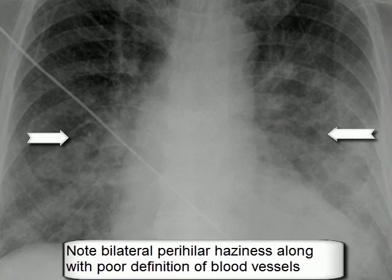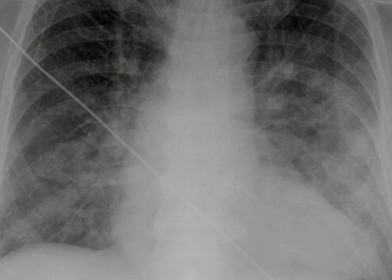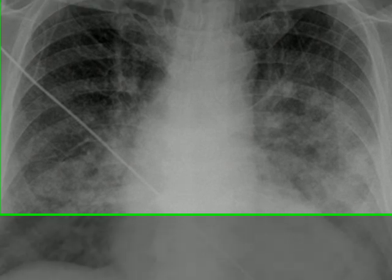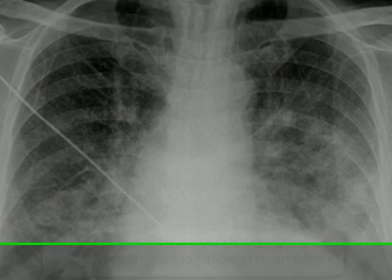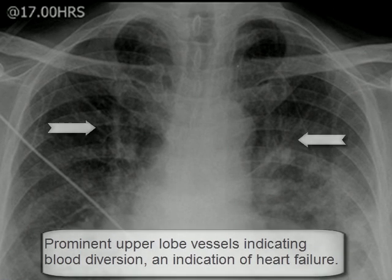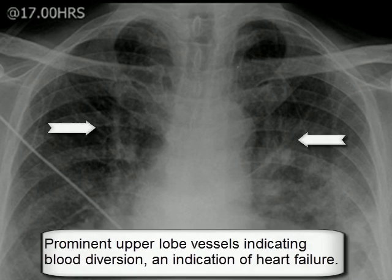The radiological stages are: first, perihilar congestion; second, interstitial edema, at which stage Kerley A and Kerley B lines appear on imaging; third, alveolar edema; and fourth, pleural effusion.